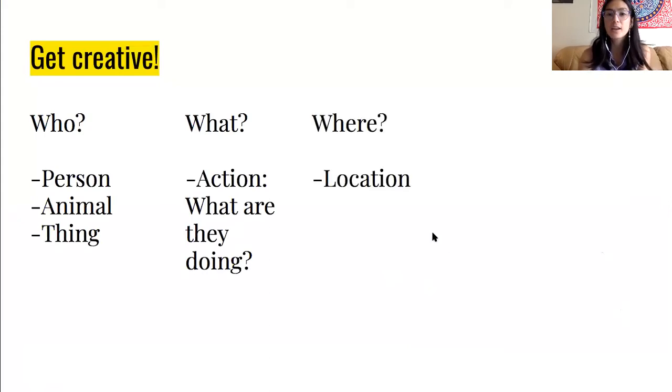Next you'll think of a where to include in your sentence. This is a location. So if my who is Barack Obama and my action or my what is dancing, Barack Obama might be dancing in the White House.